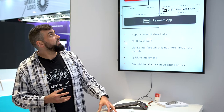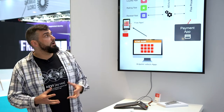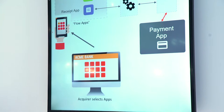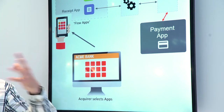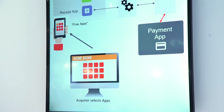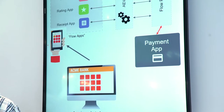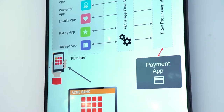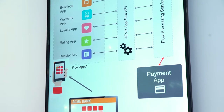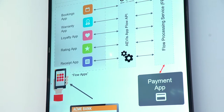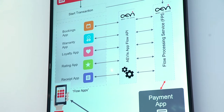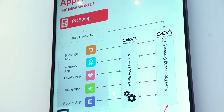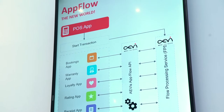So what have we done? We've come up with a thing called AppFlow. AppFlow really blows apart all of those direct integrations and says apps don't integrate with apps anymore — apps integrate with AppFlow. Because of that, the point of sale app becomes, instead of being the center of that star, what we call the payment initiator. It just says: I want to make a transaction now, I want to start a flow.